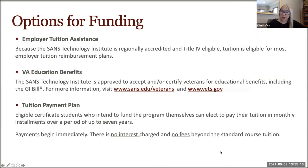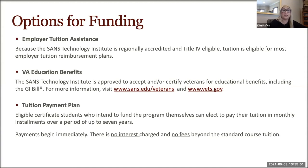For funding, our most popular option is corporate tuition assistance. Everyone's eligibility requirements are different, but because we are an accredited institution, we qualify for most of these programs. We can even assist in making individual adjustments to academic plans to minimize out-of-pocket expenses and coordinate with your tuition assistance program. The SANS Technology Institute is also approved to accept and certify veterans for VA educational benefits, including the GI Bill. This funding covers live events in Maryland or any online modality course.